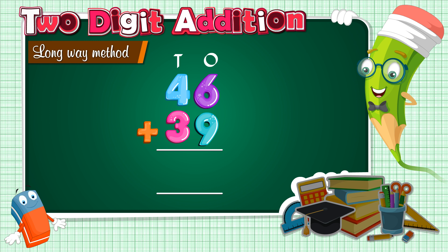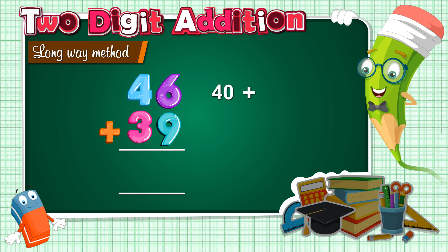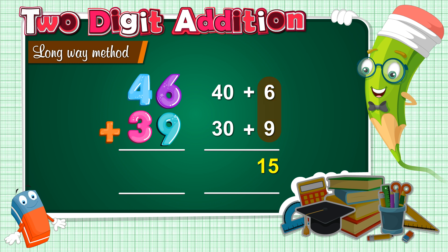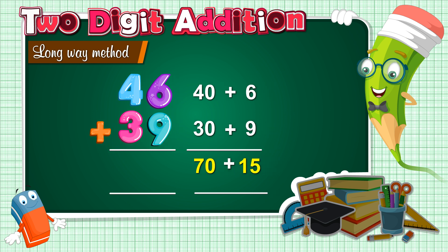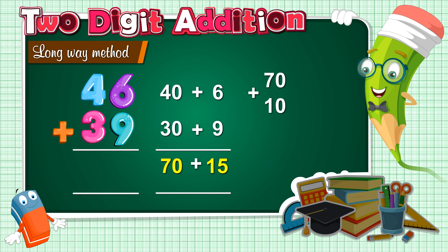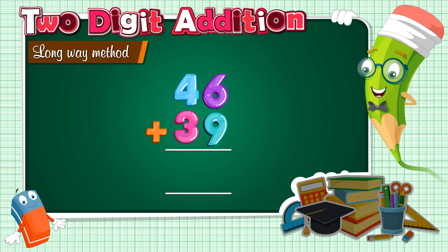Now expand both the numbers we want to add. Here, expand means split the numbers into 10's and 1's. When we expand 46, we get 40 plus 6. And for 39, we get 30 plus 9. Now add 6 and 9 as we did earlier — the answer is 15. Now add 40 and 30, which is equal to 70. Now again expand 70 plus 15: we get 70 plus 10 plus 5. After adding these numbers, we get 85. So, 46 plus 39 is equal to 85.